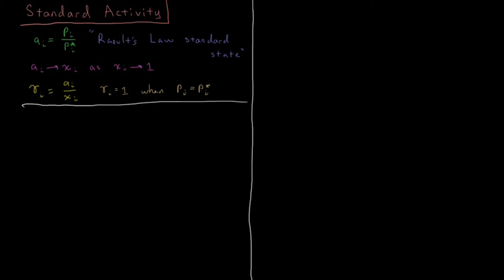In this video we're going to discuss a caveat of the use of activity, in that you have to make a choice about what the standard state is and whether that standard state is based on Raoult's Law or whether it's based on Henry's Law. In the previous video we defined the activity to be the ratio of the vapor pressure of a given component of a solution divided by the vapor pressure of the pure liquid of that component under the same conditions. This is called the Raoult's Law standard state, because the activity of a given component is going to approach the mole fraction as the mole fraction of that component approaches 1, or as the solution approaches pure liquid of component i.